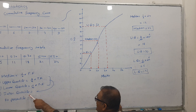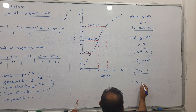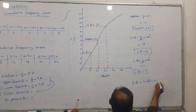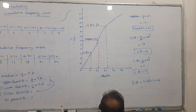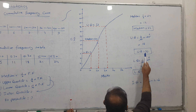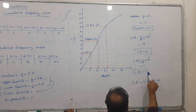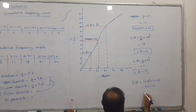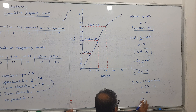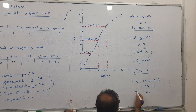Now for the interquartile range: Upper Quartile minus Lower Quartile. Some students mistakenly use the pointer numbers — do not use those. Use the final answers. So 33 minus 12 gives 21. The interquartile range is 21.